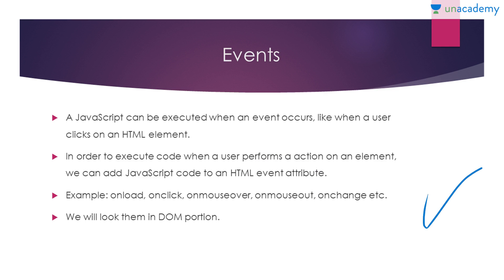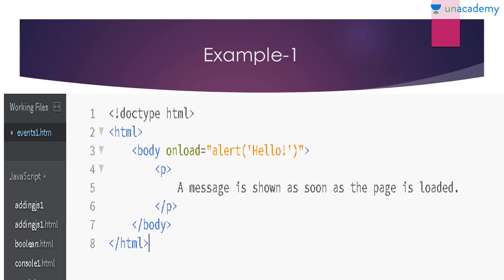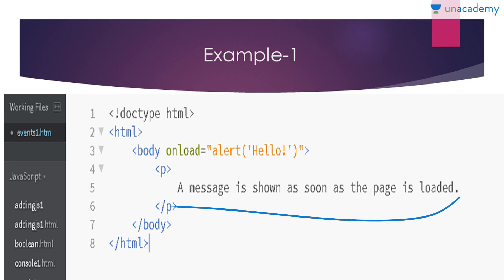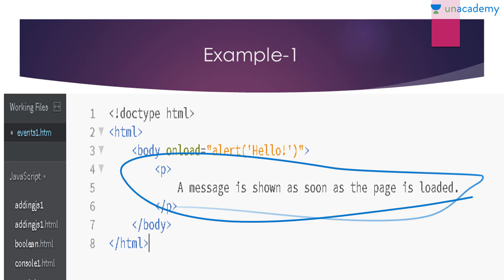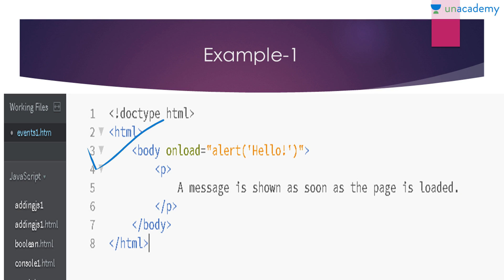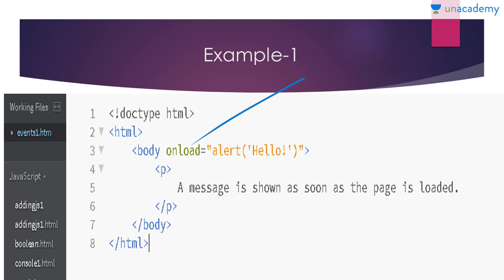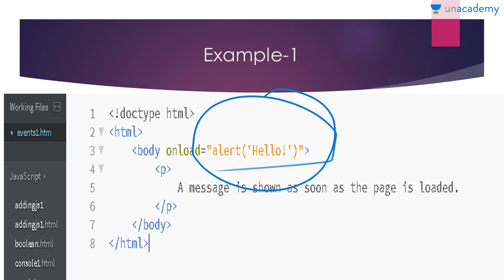Here is the first example. This is a simple HTML page with an opening and closing HTML tag, a body tag, and a simple paragraph. In the body tag I want an alert to show as soon as the page loads, showing the message 'hello'. We can do that using 'onload', which is used when you want to perform an action as soon as the page loads. I used it as an event attribute inside the body tag.